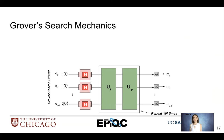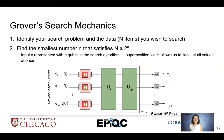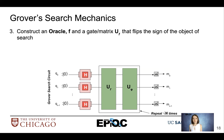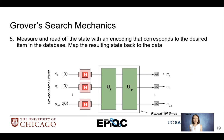Now that we know how to construct the oracle and the main components of Grover's search, let's talk about the mechanics. We identify our search problem with N total items to search, then find the smallest n such that N ≤ 2^n. Input x is represented with n qubits, all placed into superposition to examine all values at once. We construct oracle U_f to flip the sign of the object of search, then run U_f followed by U_φ, the Grover diffusion operator, √N times. Then we measure and read off the state corresponding to the desired item in the database.